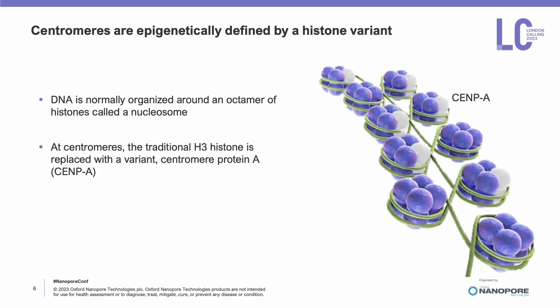but are rather defined epigenetically by the presence of a specific histone variant. Instead of the traditional H3 histone, centromere protein A, or CENP-A, is incorporated into centromeric nucleosomes, and it's the presence of this protein that defines centromere location. While most primates have alpha satellite DNA at their centromeres, gibbons have different DNA repeats, and so we were interested in studying how this might be related to their rapid chromosome evolution.